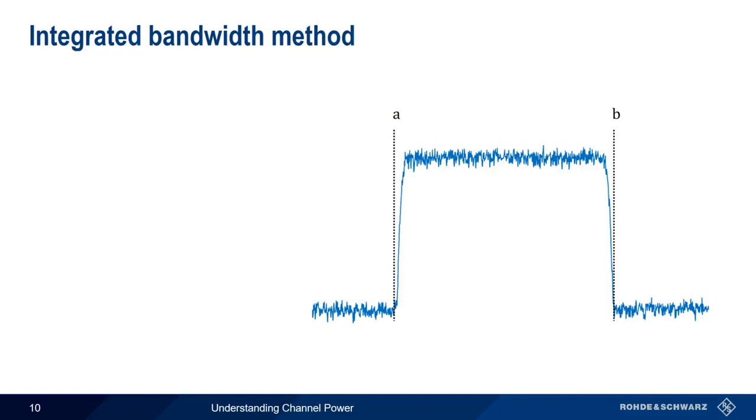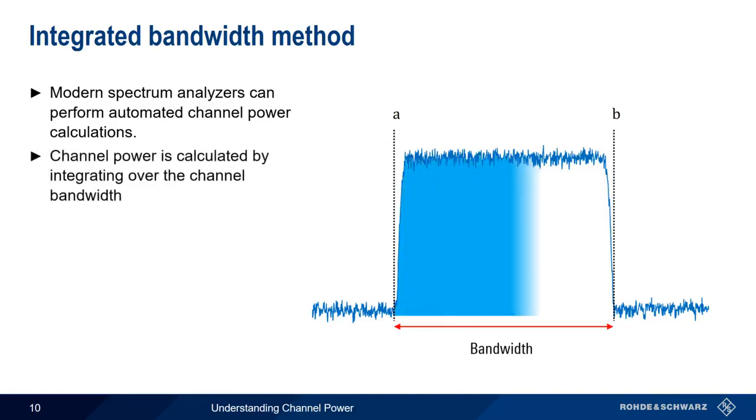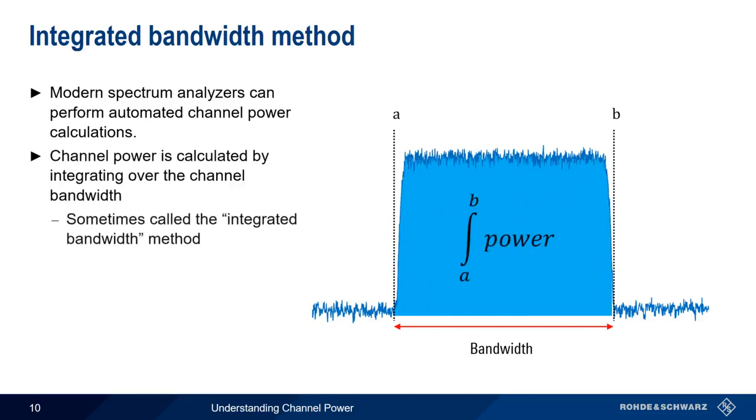Now let's describe the last of the three main channel power measurement methods. Most modern spectrum analyzers can automatically calculate channel power given the channel bandwidth and frequency. This measurement is done by integrating over the channel bandwidth, so this method is sometimes called the integrated bandwidth method.